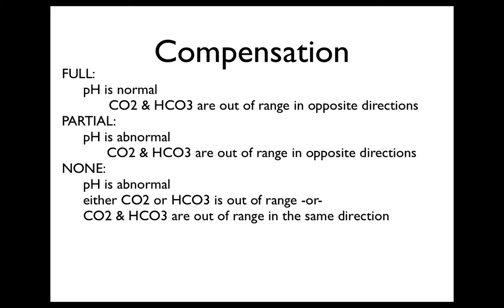No compensation means the pH is abnormal, so less than 7.35 or greater than 7.45, and either the CO2 or bicarb is out of range, or both the carbon dioxide and bicarb are out of range in the same direction — they'll both be low or they'll both be high.